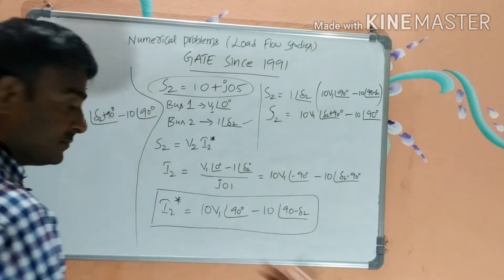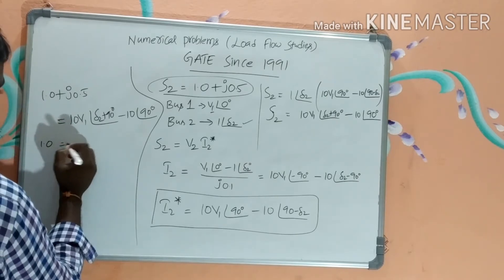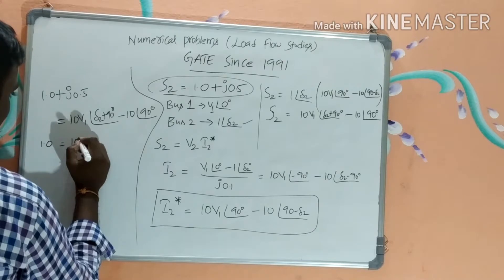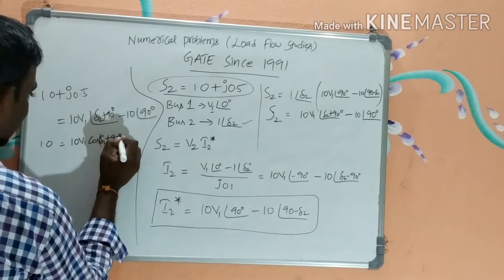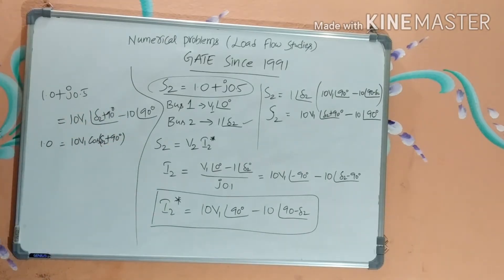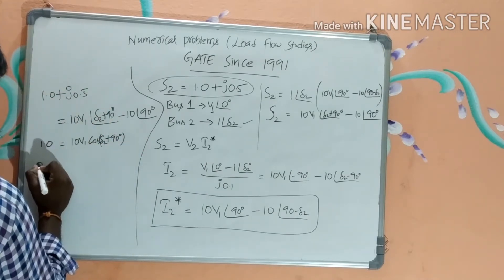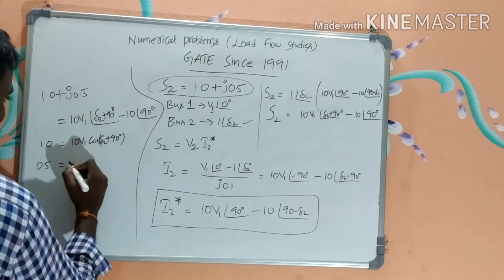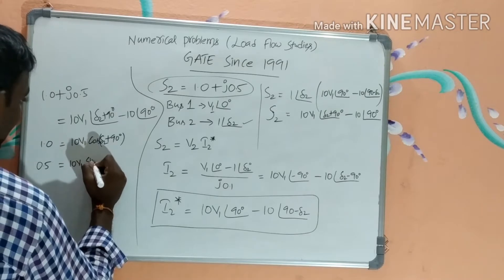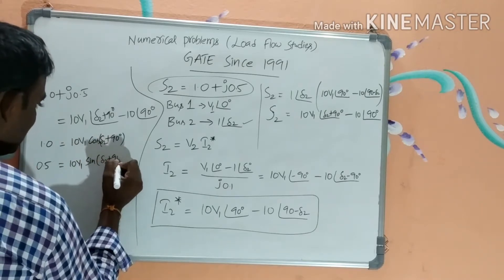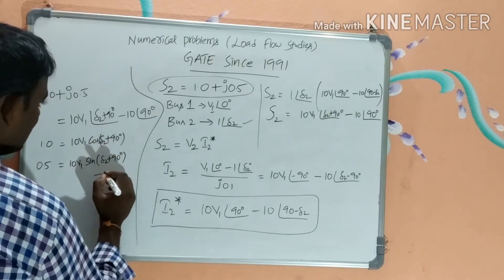How can we get the real and imaginary terms? The real term on the left is 1, and on the right it is 10V1·cos(delta2+90°). The imaginary term is 0.5 on the left, equal to 10V1·sin(delta2+90°) minus 10 on the right.